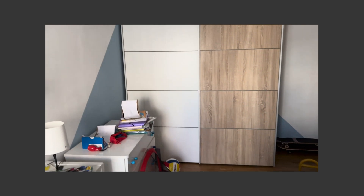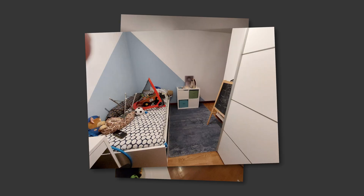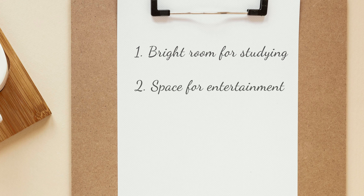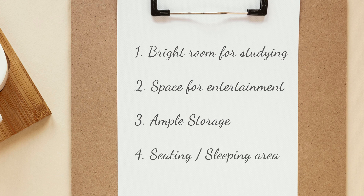The current room features a large wardrobe that takes up too much space in this already small room. Since it's currently used by a middle school student, the requirements for this room are: it needs to be bright for studying and storing books and materials; it should also have space for entertainment such as watching TV and playing video games; ample storage is necessary for clothing and keeping toys out of sight; and there should be a seating area that can also be used for sleeping. To ensure that my sister can handle everything on her own, all the furniture must come from IKEA, which offers affordable and easy-to-assemble options.